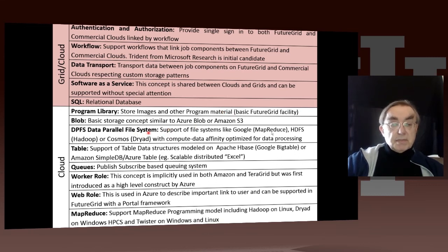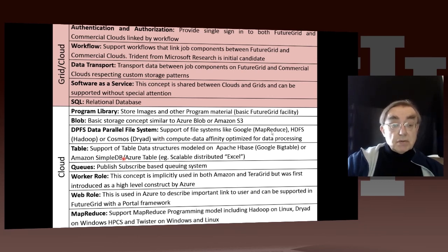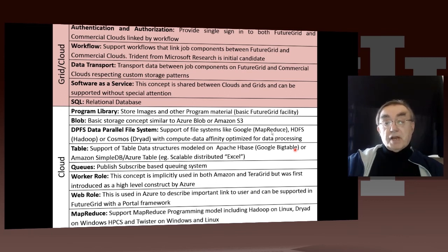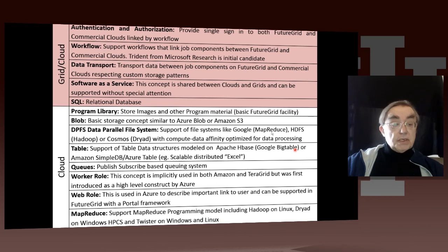The data parallel file system is what Hadoop does with HDFS — it's the Google file system. Cosmos is Microsoft's data parallel file system, used by Bing and commercial systems. Table is a NoSQL construct — SimpleDB and Azure Table. You can view this as a scalable distributed Excel. There are BigTable and LittleTable versions: LittleTable tends to handle small amounts of data, while Google BigTable — available as Apache HBase — handles large amounts. Queues and publish-subscribe are well-known messaging-oriented middleware, very helpful; you should use queues wherever possible.